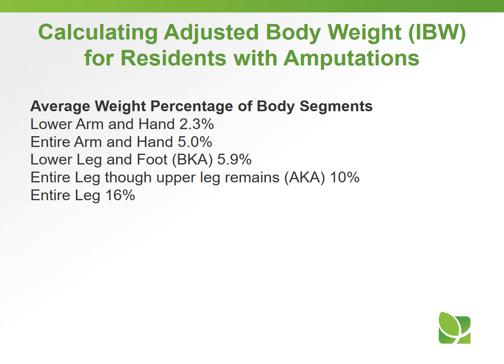Listed here are the average weight percentages of body segments: lower arm and hand, 2.3%; entire arm and hand, 5%; lower leg and foot (BKA), 5.9%; entire leg through upper leg remains, 10%; and entire leg, 16%.